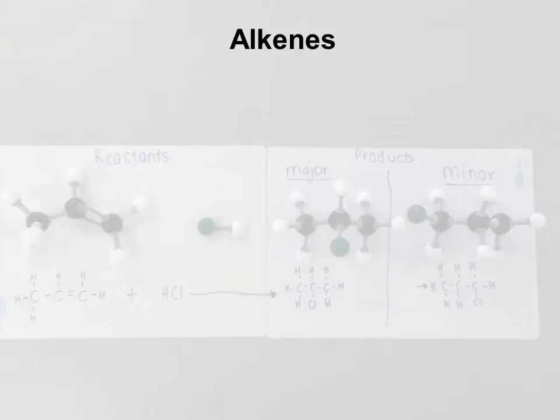Right, so the next group of organic compounds are alkenes. You can recognize alkenes—they have a double bond. Sometimes the double bond doesn't show if it's in a condensed formula, and we can identify alkenes because they have twice as many hydrogens to carbons if there's one double bond.